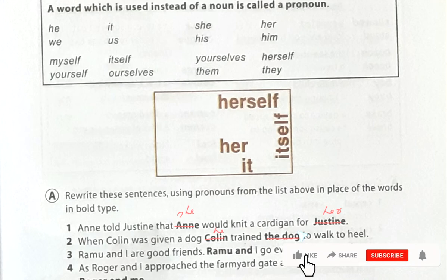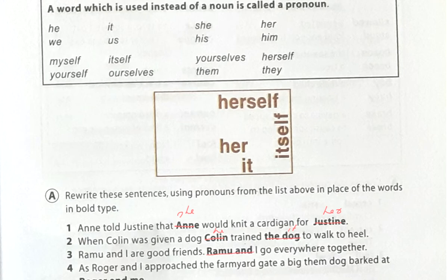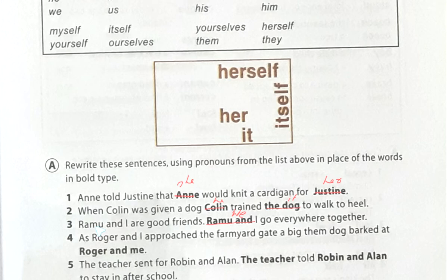Number three: 'Ramo and I are good friends. Ramo and I go everywhere together.' Here we can replace 'Ramo and I' with 'we' — that is the pronoun. Number four: 'As Roger and I approach the farmyard gate, a big dog barked at Roger and me.'